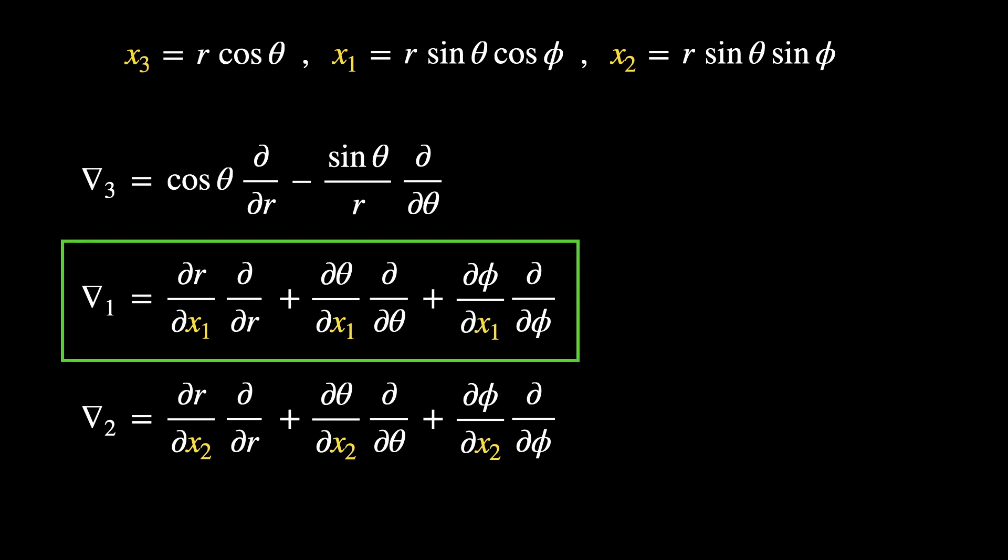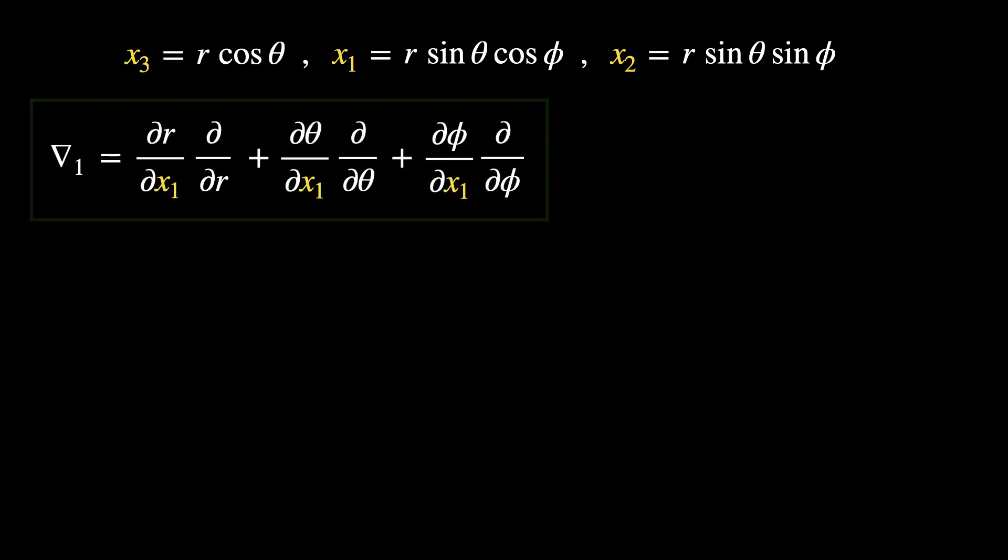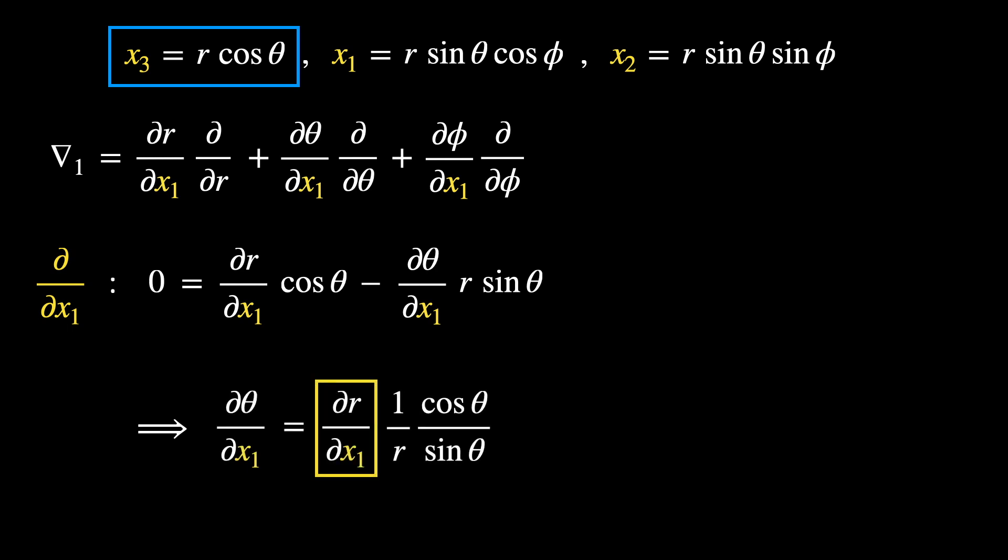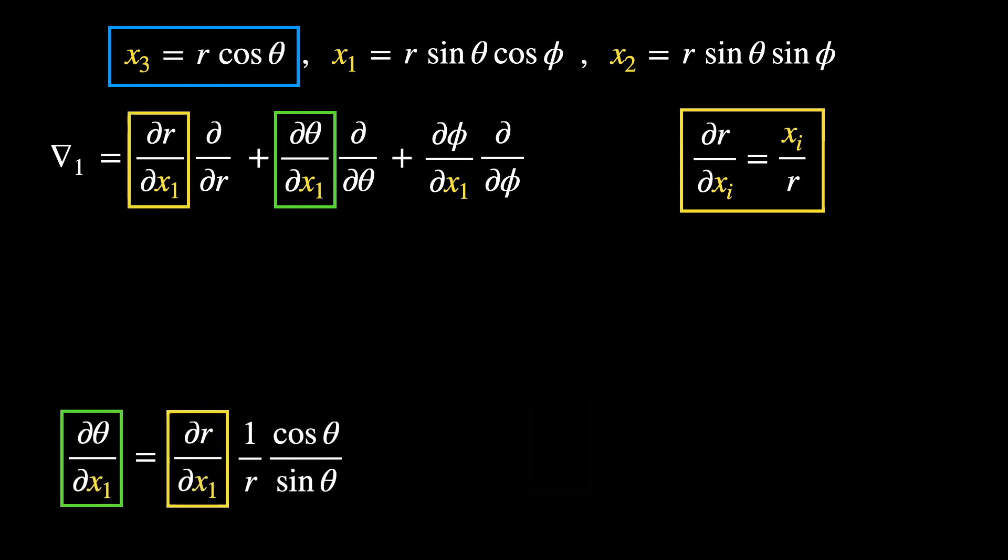Let's now do del-1. Once again, we could get a constrained equation relating the derivatives of both R and theta with respect to x1 using the equation in the blue box. Taking derivatives on both sides of this equation, this allows us to express the theta derivative in terms of the one on R. And we already know the result for R from before in the yellow box. So, the derivative on theta in the green box is basically solved.